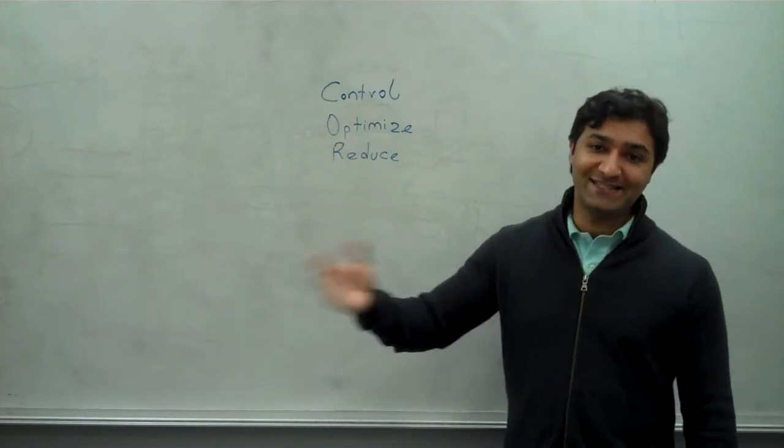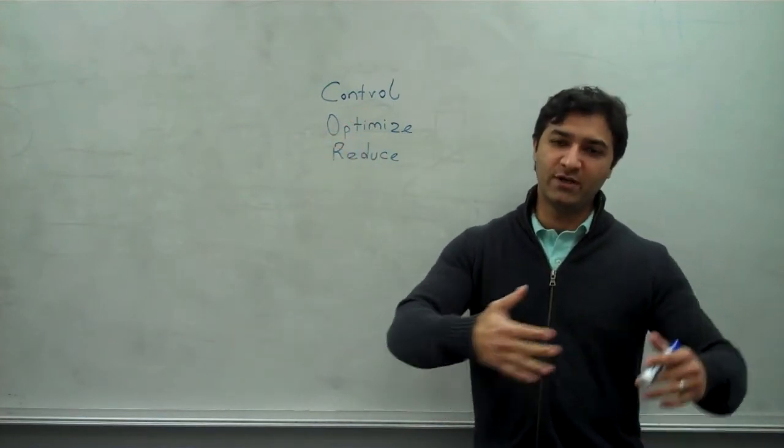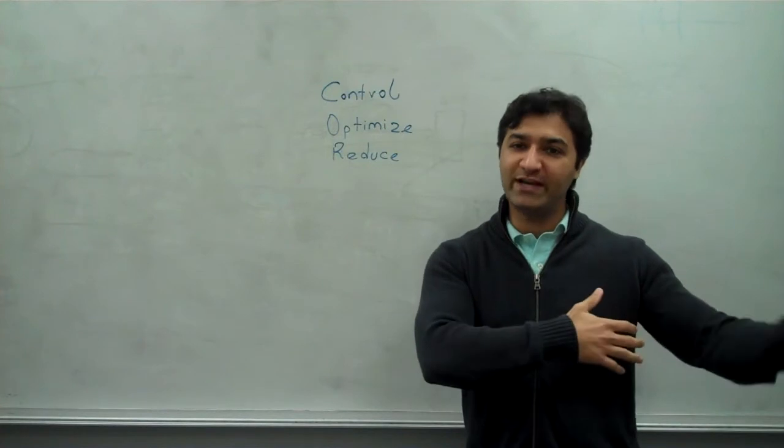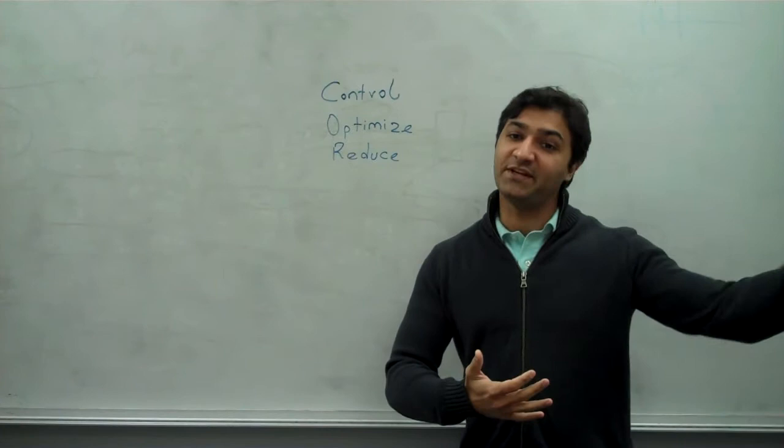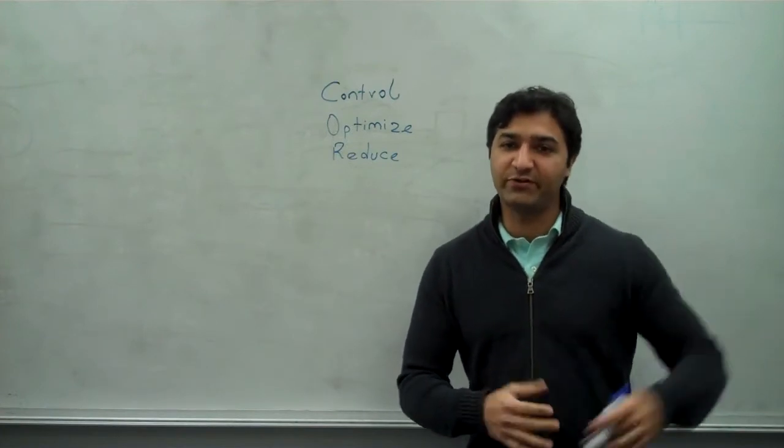The optimize is the TCP optimization, where we make sure a single TCP connection can scale to very high speeds, regardless of latency loss. And reduction is the velocity of the engine, plus the compression, plus the repeat-byte suppression.